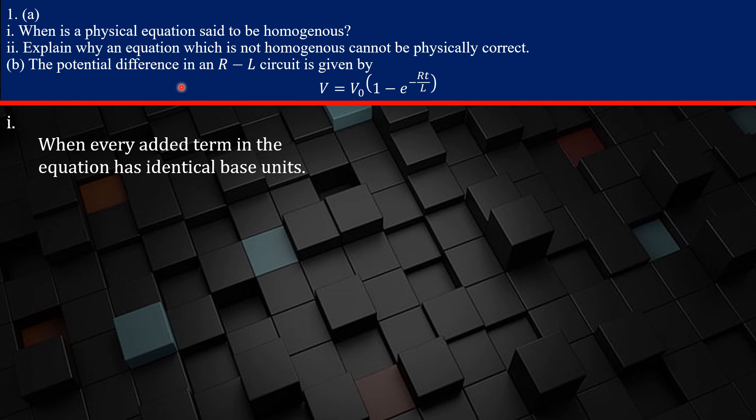Part B will say, explain why an equation which is not homogeneous cannot be physically correct. Okay, so when our students read this, they were like, okay, an equation that's not homogeneous cannot be physically correct because homogeneity is a necessary condition for the correctness of a physical equation. And so when a physical equation is not homogeneous, it is not possible for it to be physically correct.